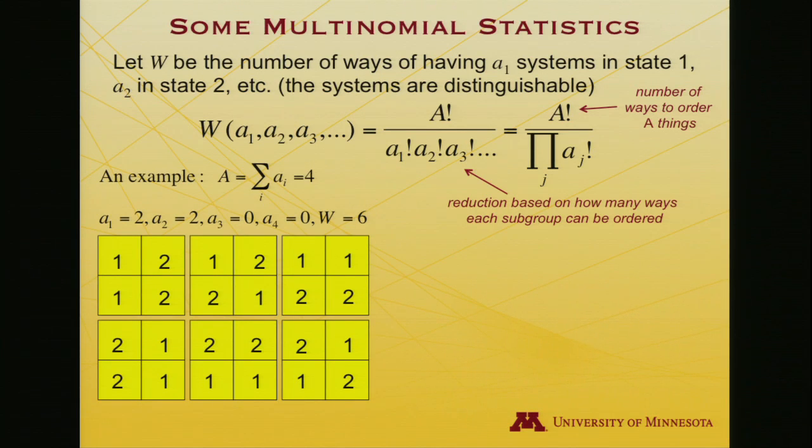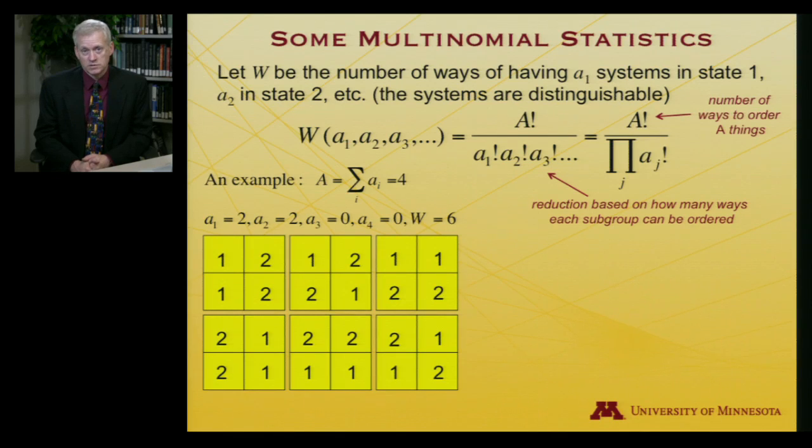And just to show an example, let's say that I have four total systems, and hence, capital A is four. And I ask the question, how many ways can I arrange two of them in state one and two of them in state two? And that uses up all my possibilities, that's four systems. So none in state three and none in state four. And I'll just explicitly draw them.